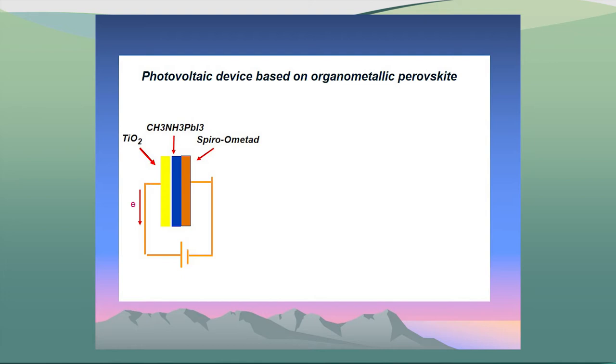The photovoltaic device is presented here. I do calculations concerning perovskite. The device consists of two materials — two layers. One layer can transport electrons, and another is a layer that transports holes. Between them, we put our perovskite. When this perovskite receives photons, there is a current which can be collected out of the device.